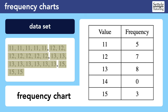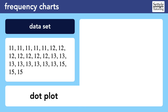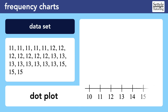The SAT will almost never give you a list of numbers and expect you to create the frequency chart. However, they will absolutely give you a frequency chart and expect you to understand the list of numbers it represents. We can also use a dot plot as a frequency chart that is a bit more visual. We start with a number line along the bottom, including values that are not on our list.